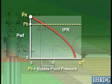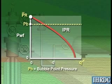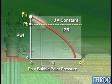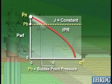Above the bubble point, the IPR curve is a straight line, and the productivity index — the slope of the IPR curve — is constant.